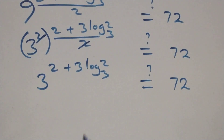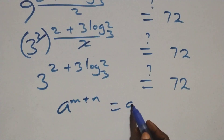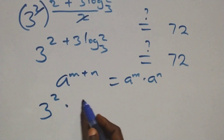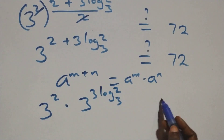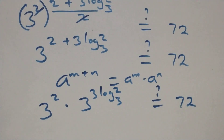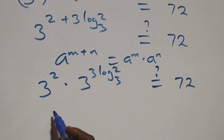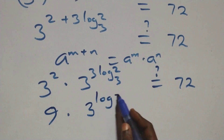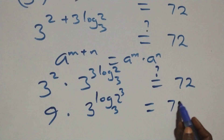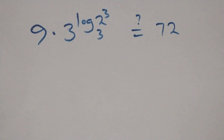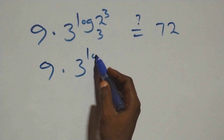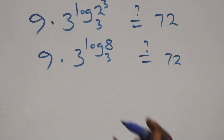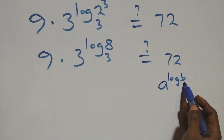We apply the law of indices: a raised to power n plus n is the same as a raised to power n times a raised to power n. This becomes 3 squared times 3 raised to power three log 2 base 3, equals 72? This follows: the power rule a raised to power log b to base a equals b.